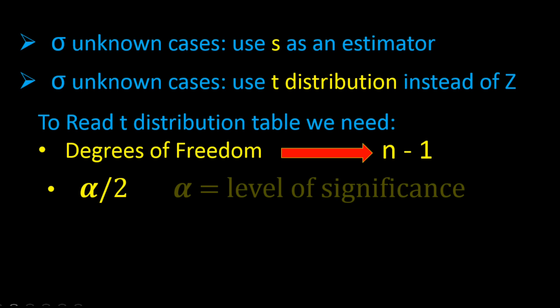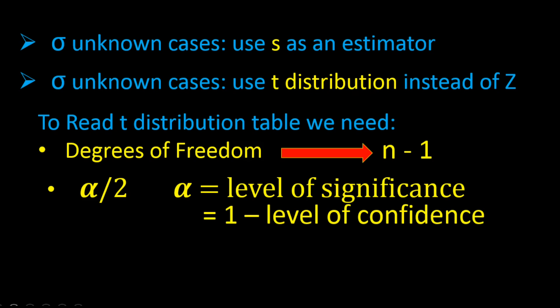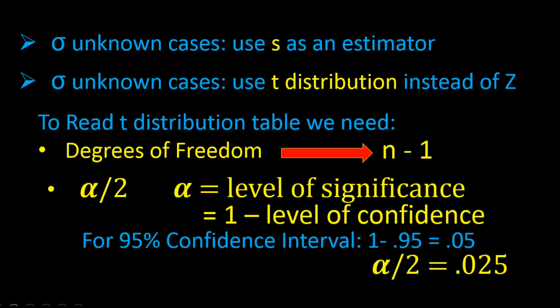Remember, alpha is the level of significance, which is 1 minus our level of confidence. So if we choose a 95% level of confidence, then the level of significance is 1 minus 0.95 or 0.05, and then alpha divided in half is 0.025. Let's take a look at what the t distribution looks like.